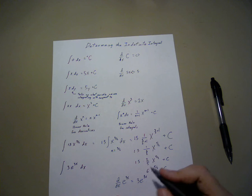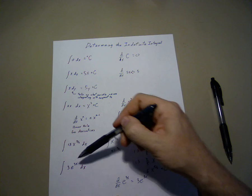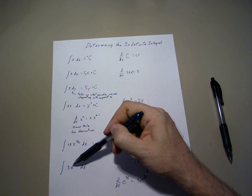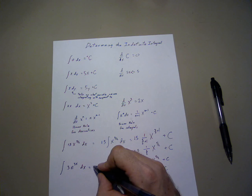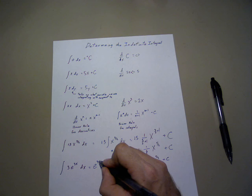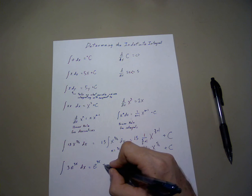Therefore, the integral of 3e to the 3x dx is e to the 3x plus c.